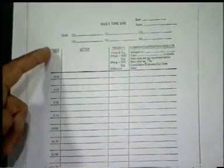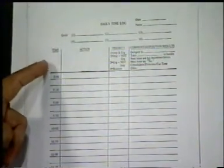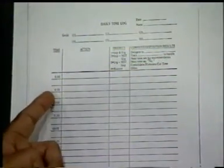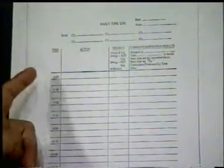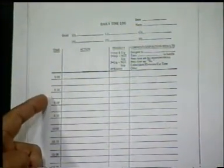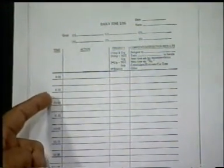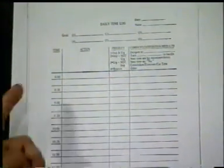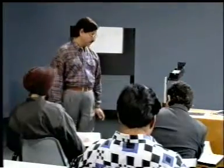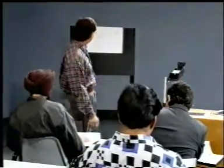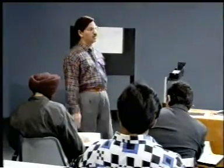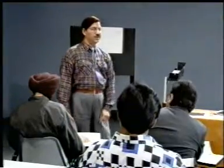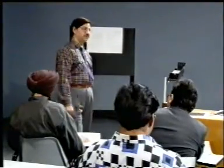Time for every 15 minutes is to be listed - 8:00, 8:15, 8:30, 8:45, 9:00, 9:15, 9:30, 9:45 - up to 5:30 or whatever is your day's routine. You list the time every 15 minutes.